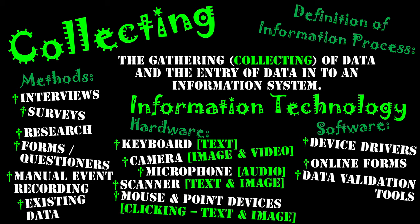There are a whole range of other types of validation we'll cover later, but essentially validation checks data at the time of collection to ensure it is correct as it is entered into a system, and if it's not correct, it won't let it enter the system. Finally, we have import software tools — jumping back to existing data, import software tools are what allow us to get information from another system and insert it as data into our information system.